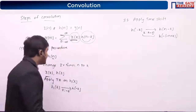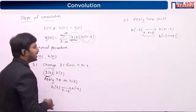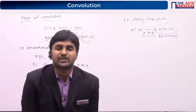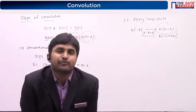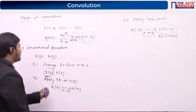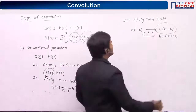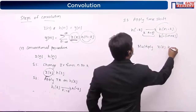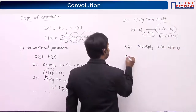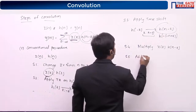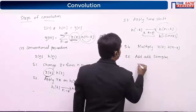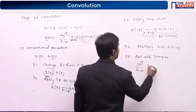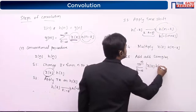So now you have x of k and h of n minus k. Step 4 is multiplication: multiply x of k and h of n minus k. Step 5 is to add all samples — summation k equals minus infinity to infinity — which is nothing but addition of all samples of the product x of k and h of n minus k. This result is the output.